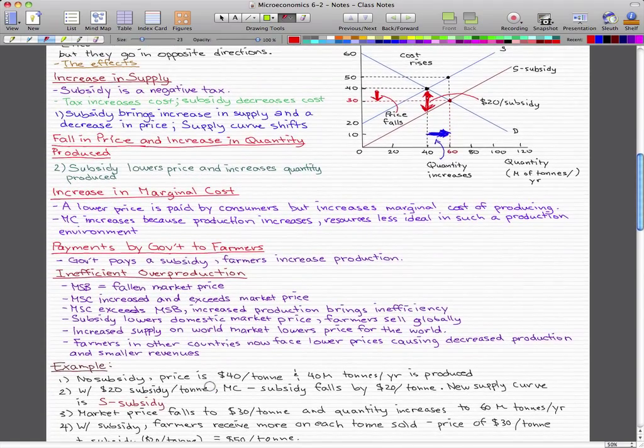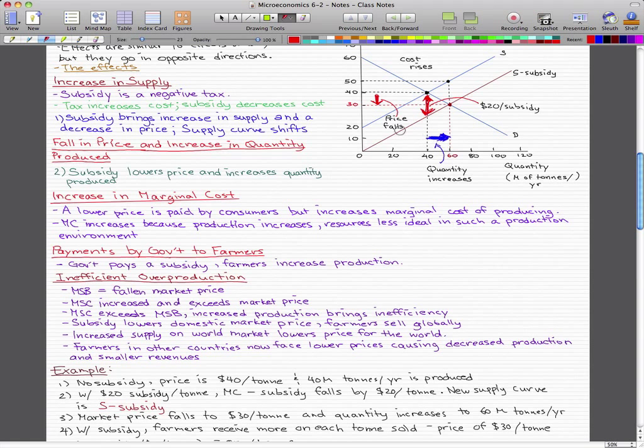Let's go through an example. In this example, we can see that with no subsidy, the price is $40 per ton and 40 million tons per year is produced. With the $20 subsidy per ton, the supply curve shifts. The marginal cost minus subsidy falls by $20 per ton, and the new supply curve is S minus subsidy.